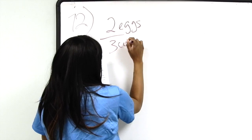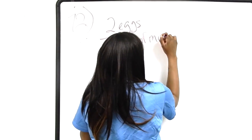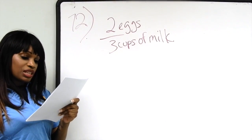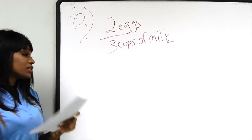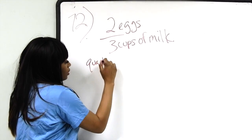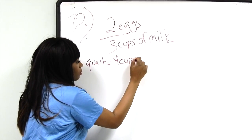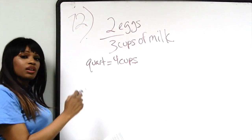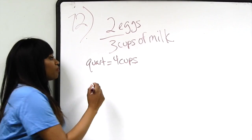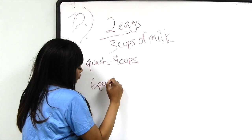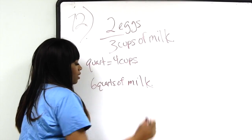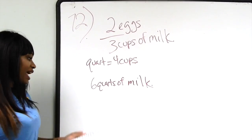That's what the information gives us. The next piece of information tells us that for every quart there are four cups of milk. And we have six quarts of milk, and we're trying to figure out how many eggs we need.